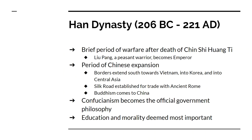The Han dynasty is the last dynasty I'm going to talk about. After Qin Shi Huangdi dies, there's a short period of warfare, and Liu Bang becomes emperor afterwards. Under the Han dynasty, the Chinese expand to their biggest size yet — their territory goes all the way from Vietnam to Korea to Central Asia. The Han establish the Silk Road so people can travel from ancient China to ancient Rome. Buddhism comes to China along the Silk Road, and the philosophy of Confucianism becomes the official government philosophy. The most important thing in Han China is to be educated and to be a moral person.